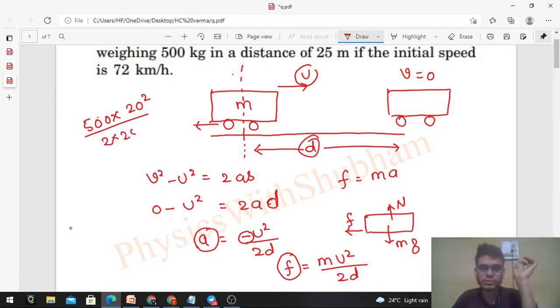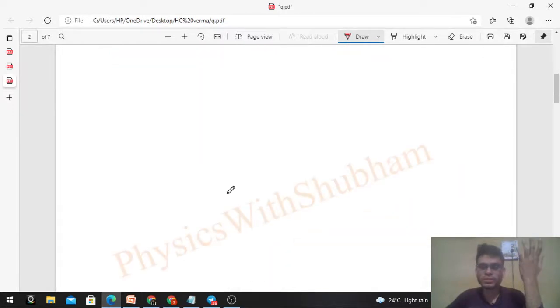This will be your answer. And if you want to do it using work-energy theorem, that is also possible and quite simple. In work-energy theorem, work done by all the forces is equal to change in kinetic energy. How many forces are acting? Normal reaction and mg - they won't do any work because they're vertical and displacement is horizontal.